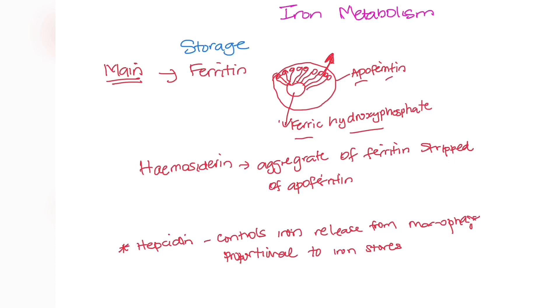There is another molecule called hemosiderin, and this is also a minor storage of iron. It is basically an aggregate of ferritin molecules. However, it is stripped of the apoferritin, so there is no outer coating, and it is insoluble, so it's less accessible. The body doesn't really store in it. However, it is a main storage in the macrophages, while ferritin is the main source in your hepatocytes.